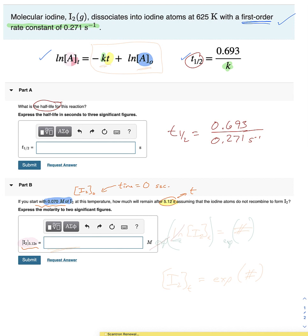And then finally, the thing we want to calculate in this case, the concentration of iodine at 5.12 seconds, that is this parameter there.